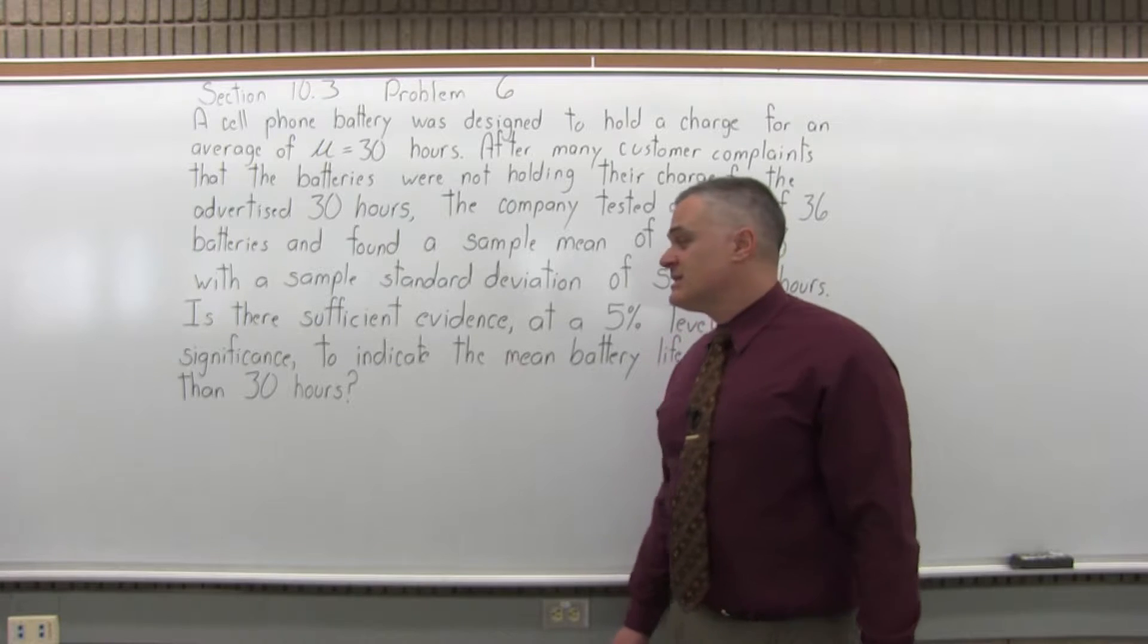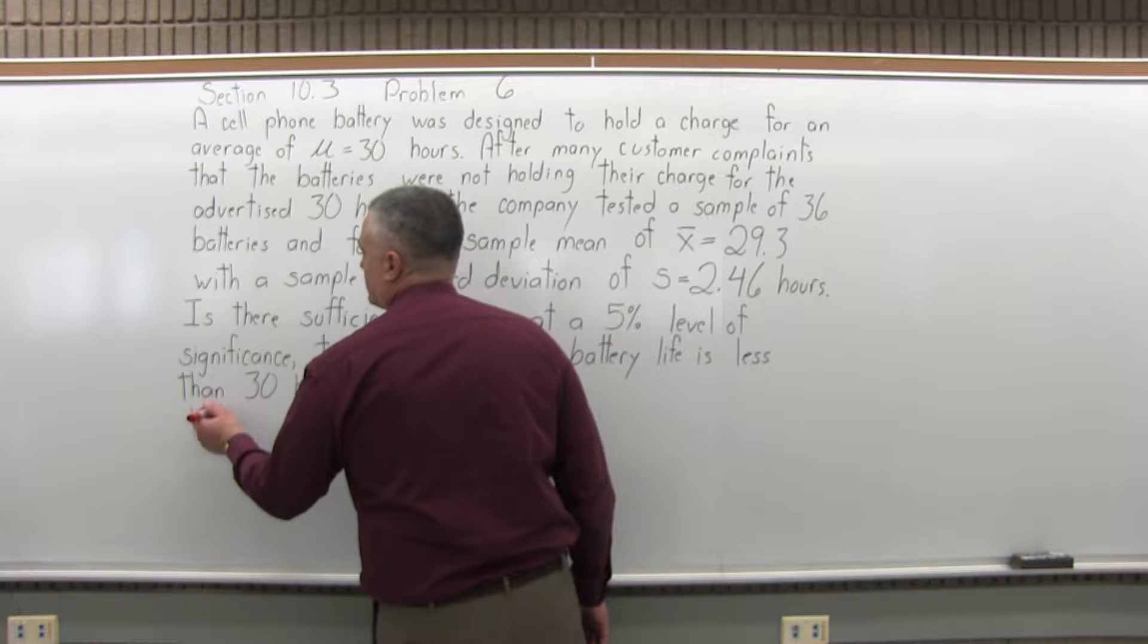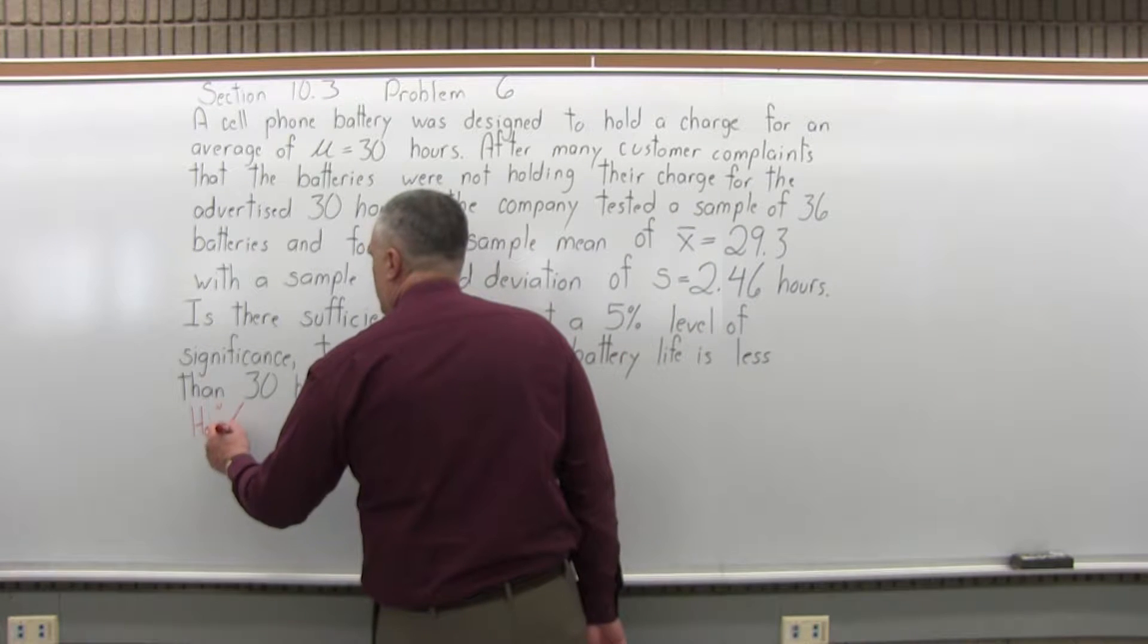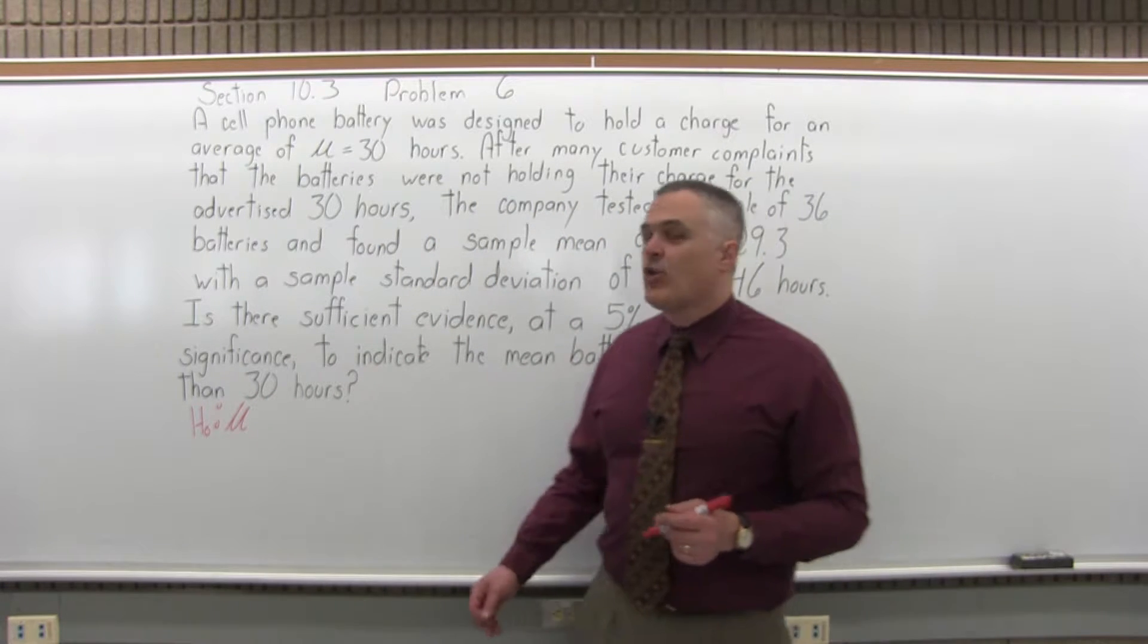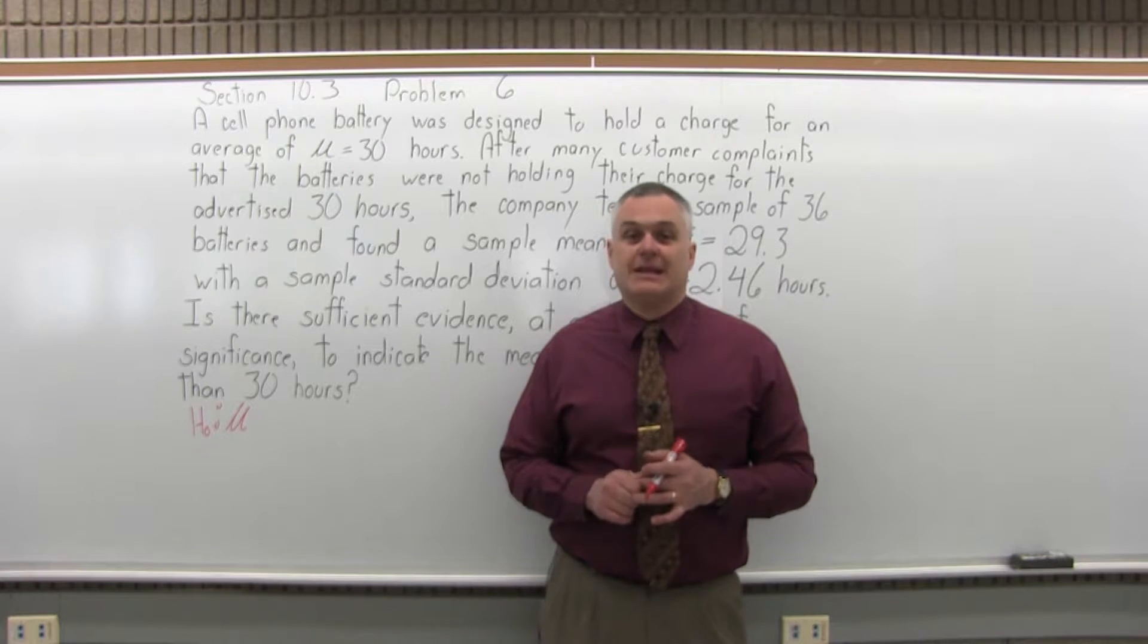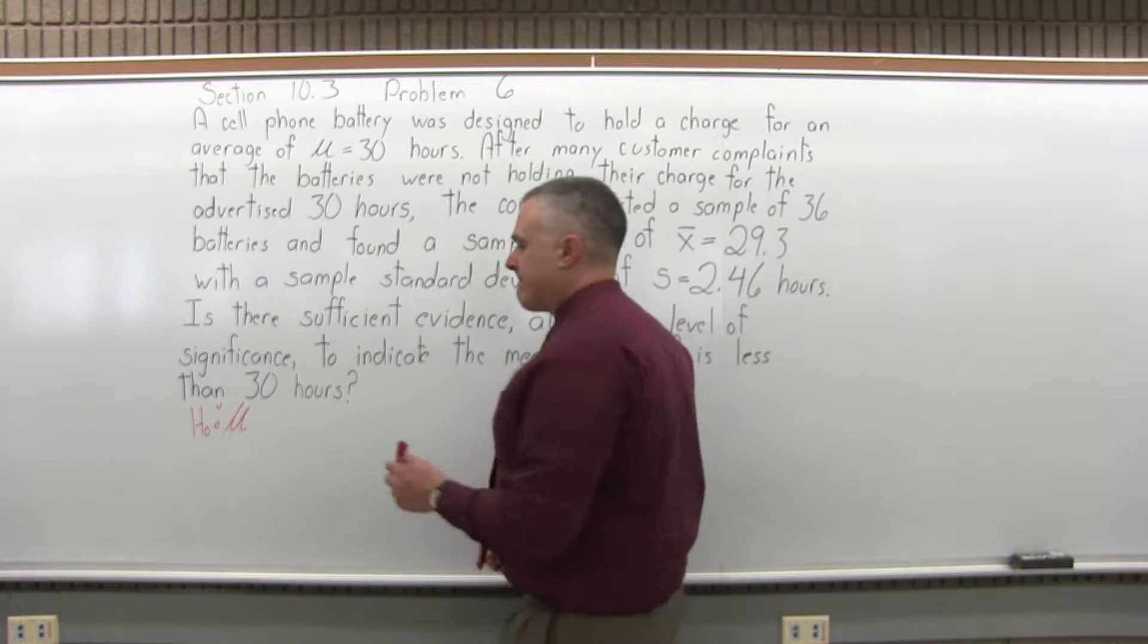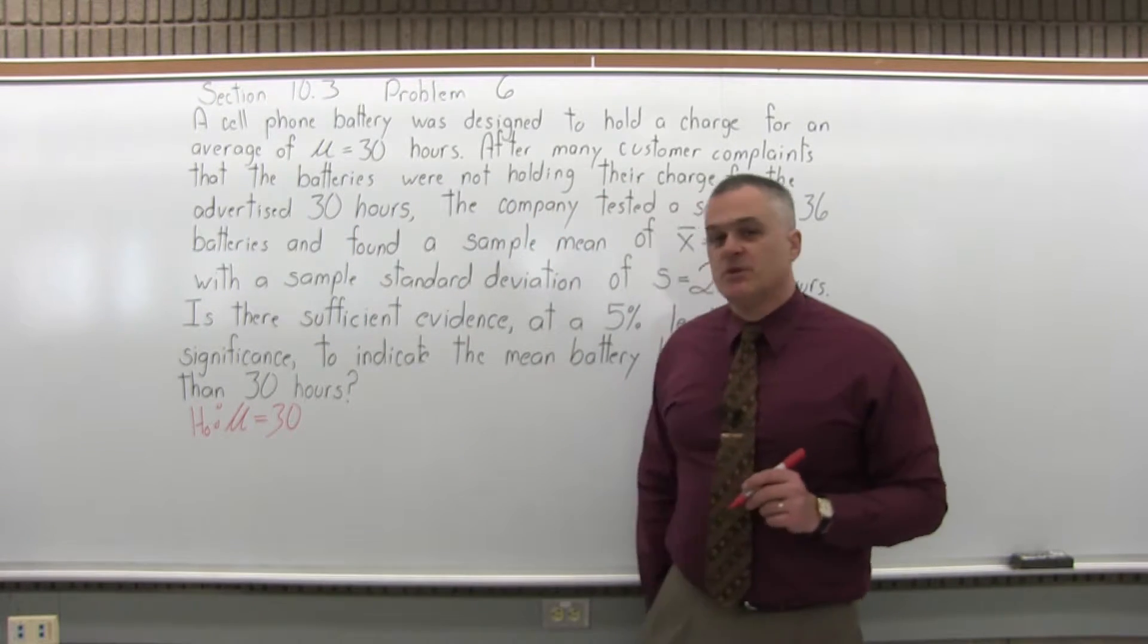So this is a hypothesis test, it's a six step process. Step one is state the null hypothesis. The symbol for null hypothesis is a capital H with a subscript of zero. You write that, you put a colon, you put mu, the symbol for population average, and then there's a symbol that contains equality. You could use an equal to, greater than or equal to, or less than or equal to. But the null contains a condition of equality. In this case it will be that mu equals 30. So that's step one. Null hypothesis is mu equals 30.